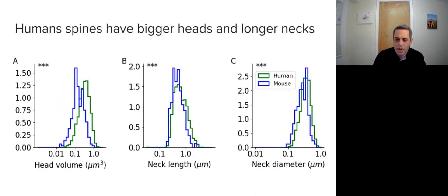Finally, we compared human and mouse spines. We showed that human spines have bigger heads and longer and thicker necks. Note that the order of magnitude of the difference is presented in a logarithmic scale.